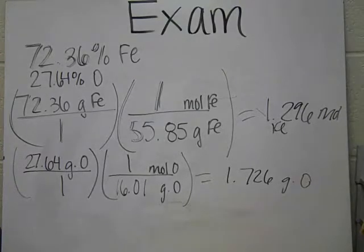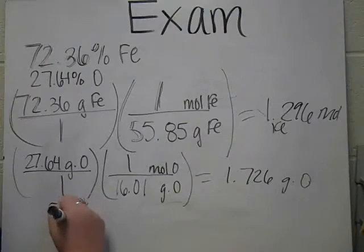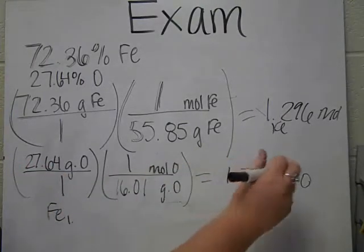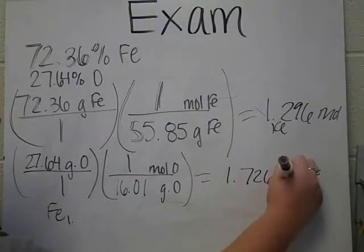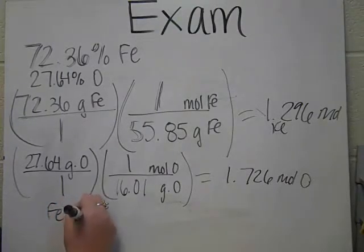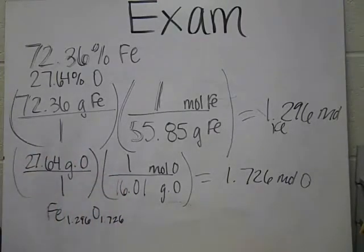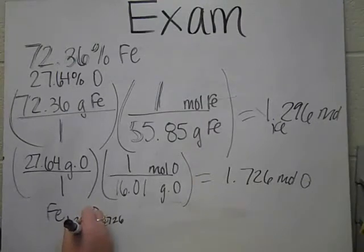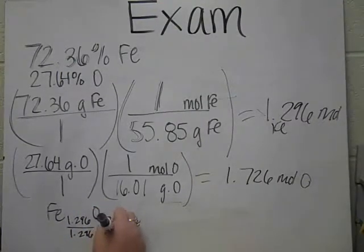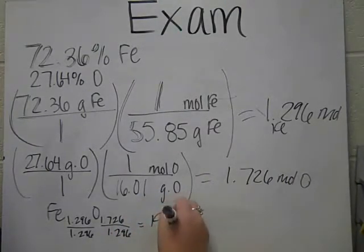What we're going to do is we're going to plug in your mole numbers as your subscripts in your formula. So, you're going to have Fe 1.296. Oh! I made a mistake over here. It's moles. Sorry about that. And so, it's Fe 1.296 O 1.726. And then, what you're going to do here is you're going to divide by the smallest number. And that number is going to be 1.296. And so, that will equal Fe 1 and O 4/3.